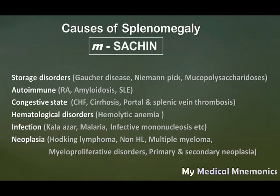These conditions cause portal hypertension, which leads to congestive splenomegaly. Hematological disorders are mainly due to hemolytic anemias — like hereditary spherocytosis, hereditary elliptocytosis, and autoimmune hemolytic anemia — and these hemolytic anemias will cause splenomegaly.